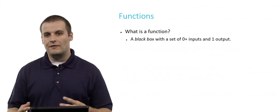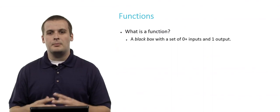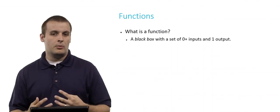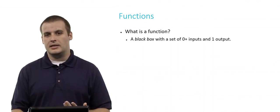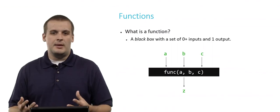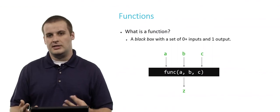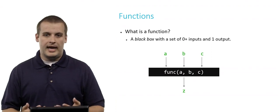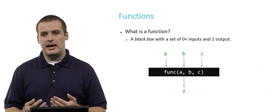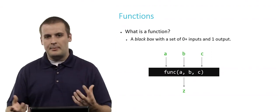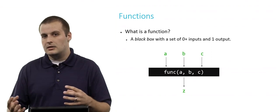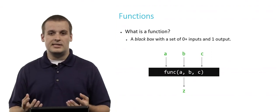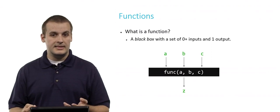What is a function? Well, a function is really nothing more than a black box — a black box that has a set of zero or more inputs and a single output. For example, this might be a function called func. It takes three inputs, a, b, and c. Inside that black box, we don't know exactly what it does, but it processes the inputs in some way and gives us a single output — in this case, z.